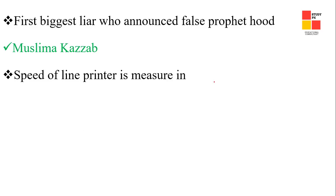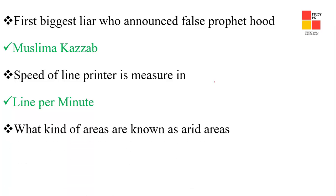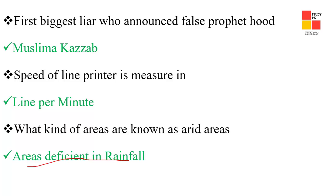Next question: speed of a line printer is measured in lines per minute. Next question: what kind of areas are known as arid areas? The right answer is areas deficient in rainfall.